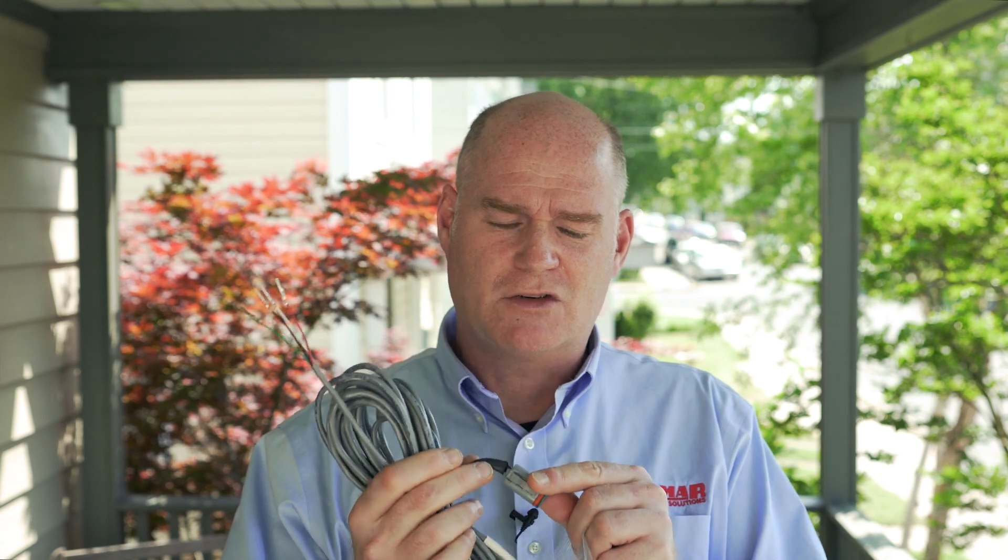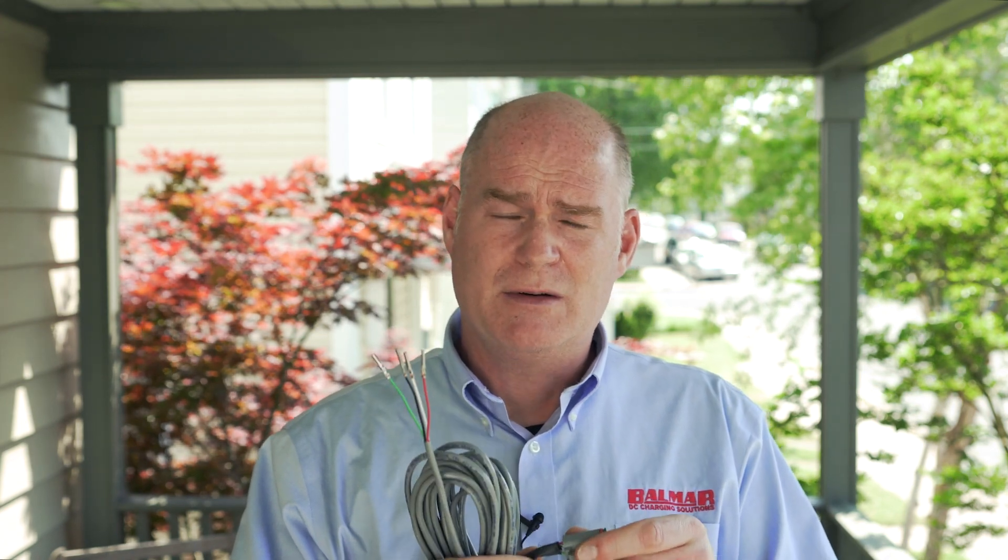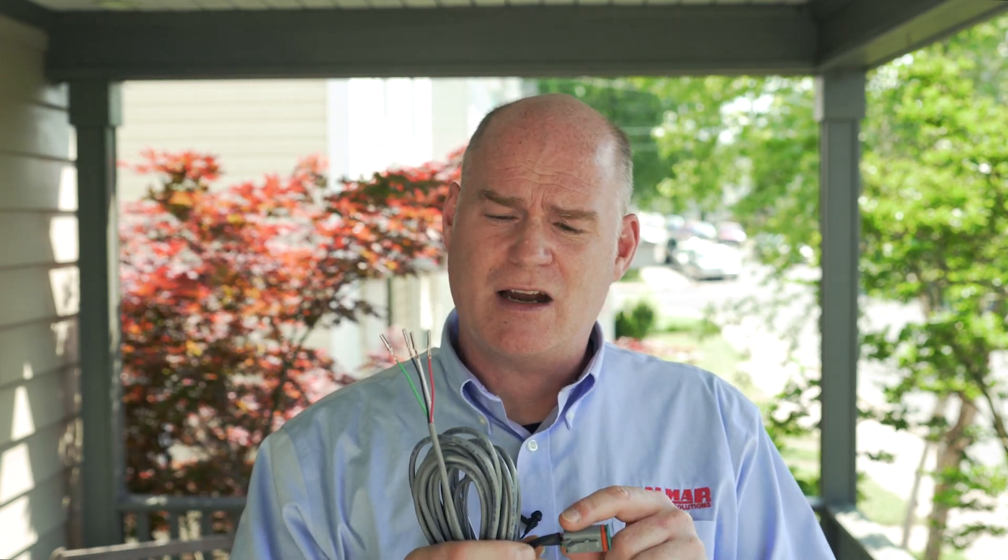Now if you're really paying attention you'll notice on the factory installed connector there's a shield wire going into the same socket as the black wire. You only need that on one end of the cable or the other, so as long as it's still there we don't need it here and that's why we've trimmed it off for you.